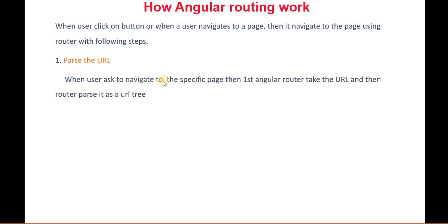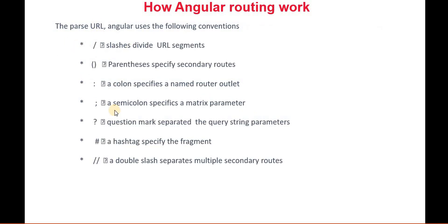Now what it does — when the user asks to navigate to a specific page, the Angular router takes the URL and then the router parses it as a URL tree. The formats it uses are: slash divides URL segments, parentheses specify a secondary route, colon specifies a named router outlet, semicolon specifies a matrix parameter, question mark separates query string parameters, single hash is used for fragmentation, and double slash separates multiple secondary routes.